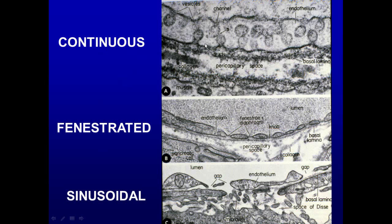Under the electron microscope: a continuous capillary shows an endothelial cell, the lumen, collagen matrix, a continuous basal lamina, channels, and vesicles pinching through. Fenestrated capillaries show where the endothelial cell becomes very thin at the fenestrae, allowing a lot of fluid through — found in endocrine tissue and the kidney. In the liver there are gaping holes with a discontinuous basal lamina, so fluid can bathe hepatocytes in the space of Disse for maximum interaction between parenchymal cells and blood fluid.